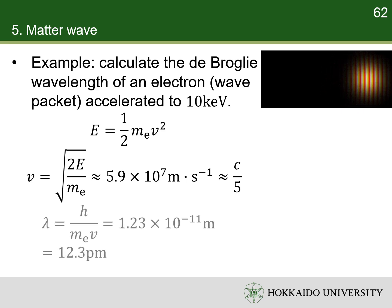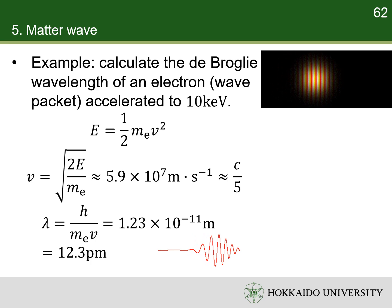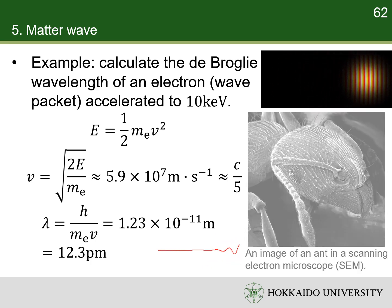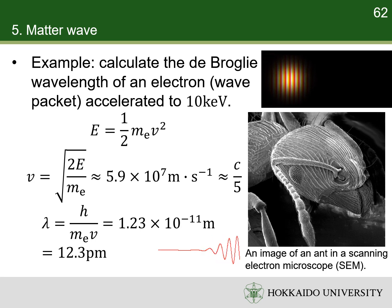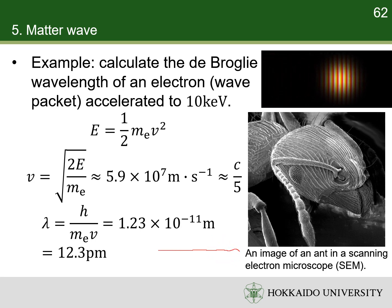Then, the wavelength of electron can be calculated with de Broglie's relation. It is smaller than the typical size of atoms. Therefore, scientists can use electron beams to image the microscopic structures of materials in electron microscopies.